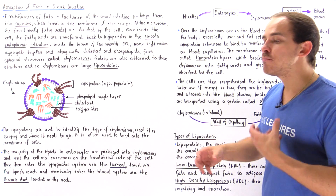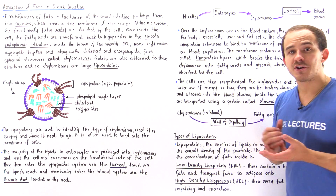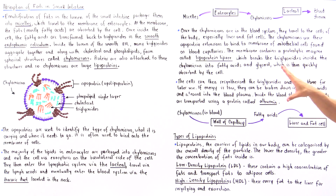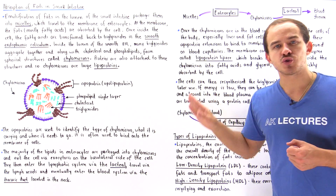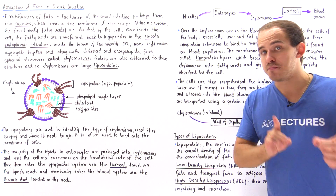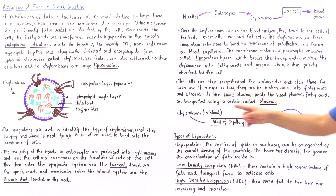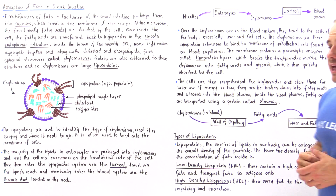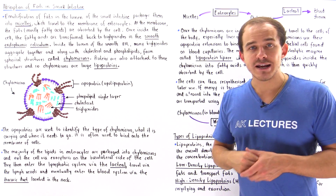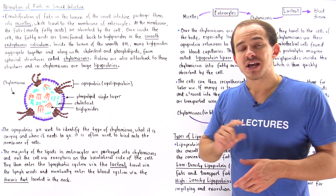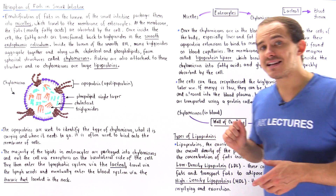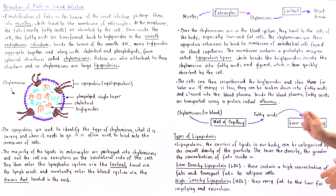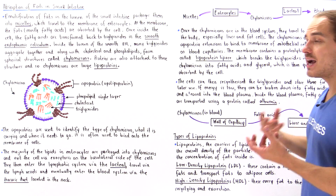If we have plenty of energy inside our body, our cells do not have to use triglycerides. But if we need energy in certain cells, the liver and fat cells can release these fatty acids into our blood system.